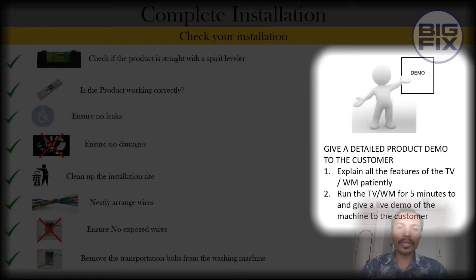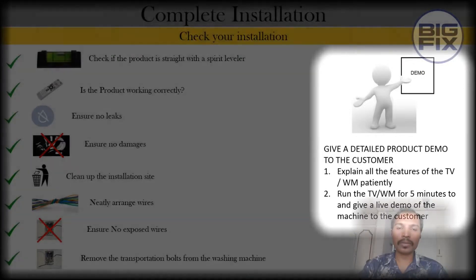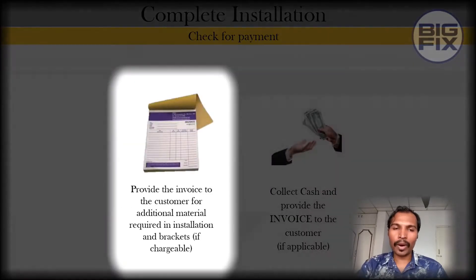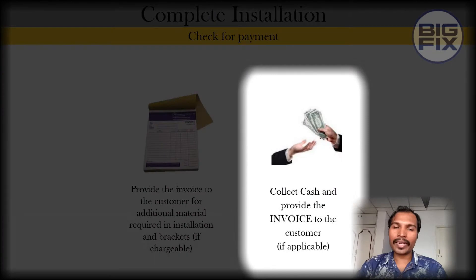At the end, give a detailed product demo to the customer. Explain all the features of the TV or washing machine patiently. Run the TV or washing machine for 5 minutes and give a live demo to the customer. Provide the invoice to the customer if there are any additional materials used for the installation. Collect cash and provide the invoice if applicable.